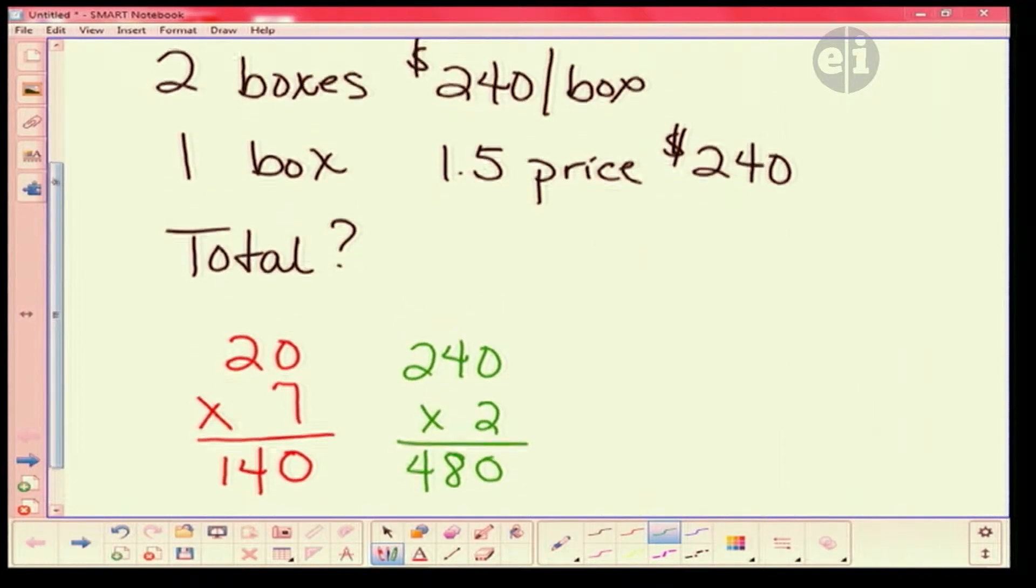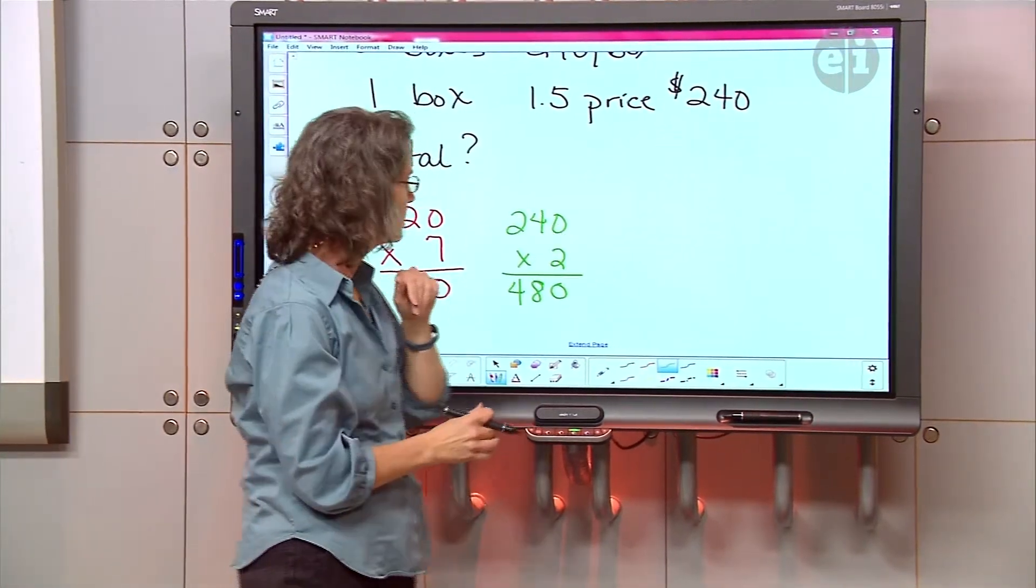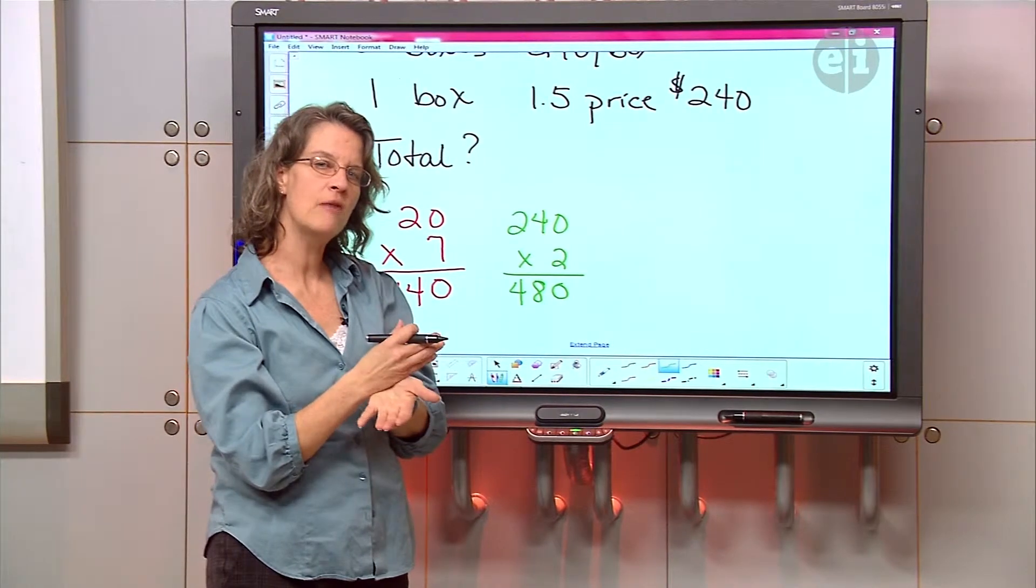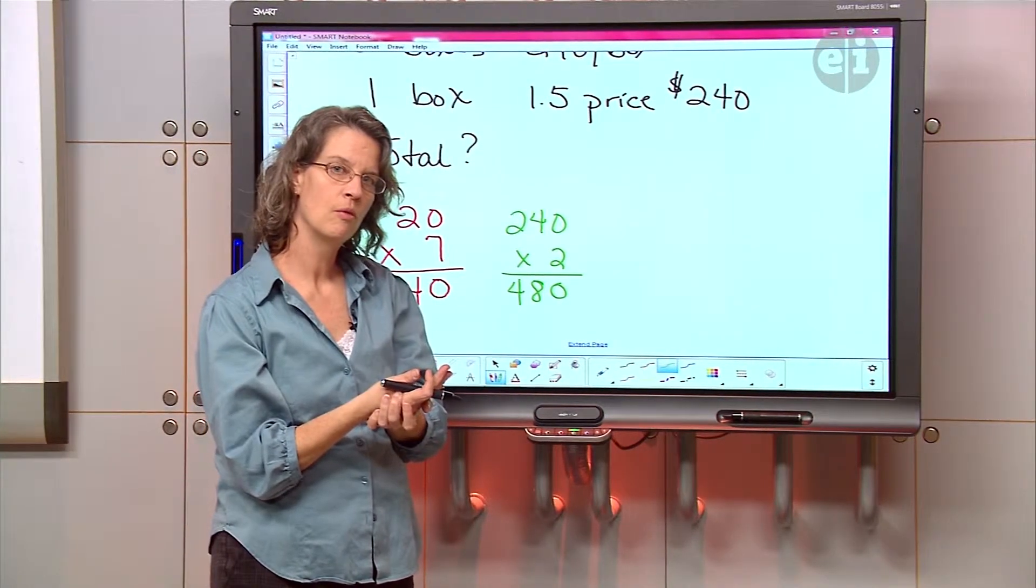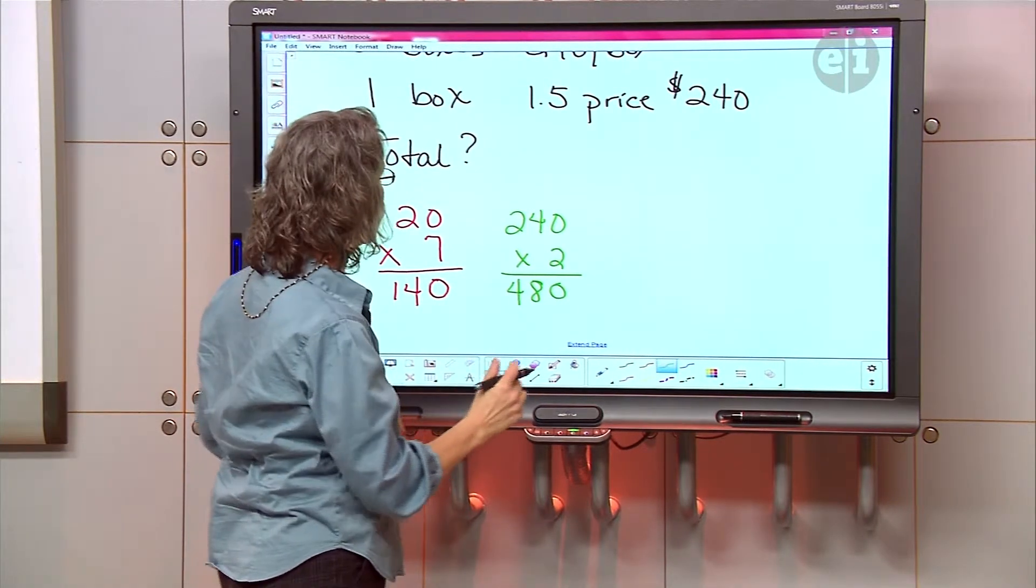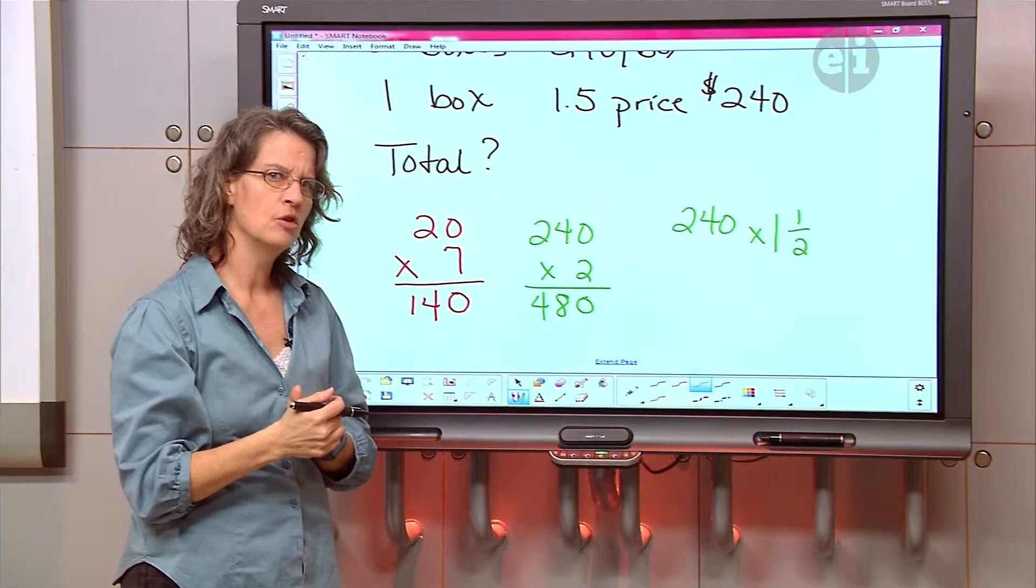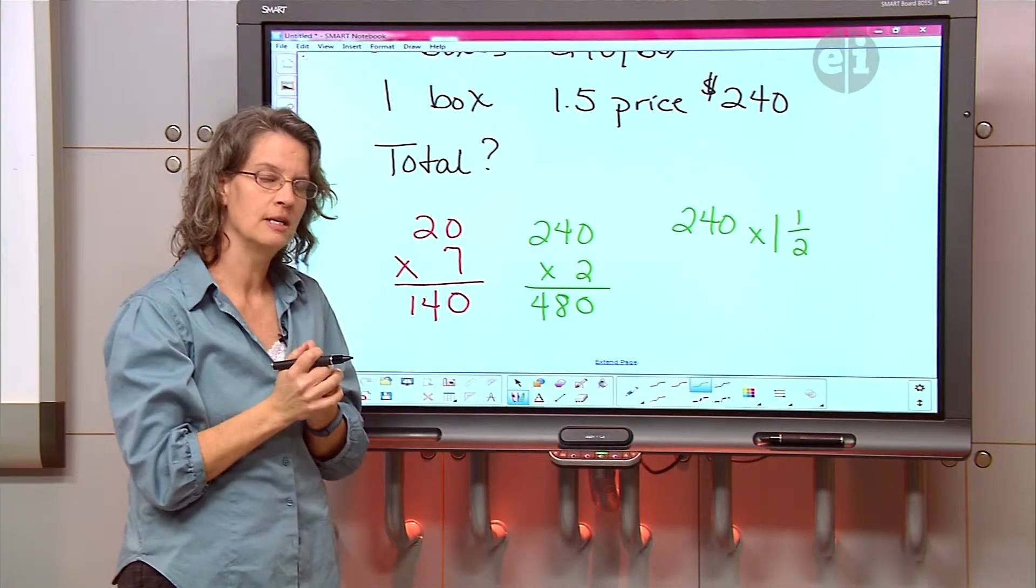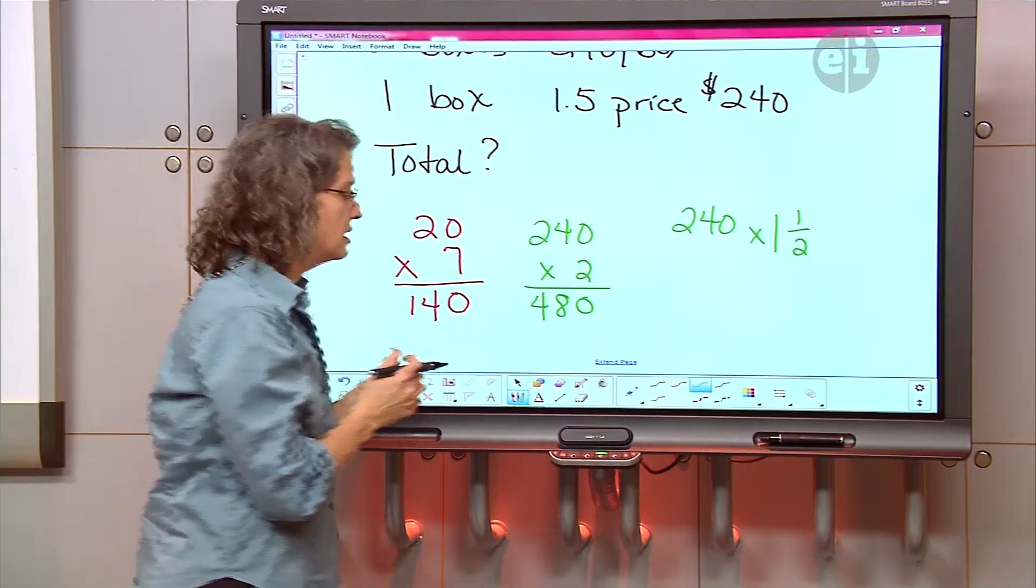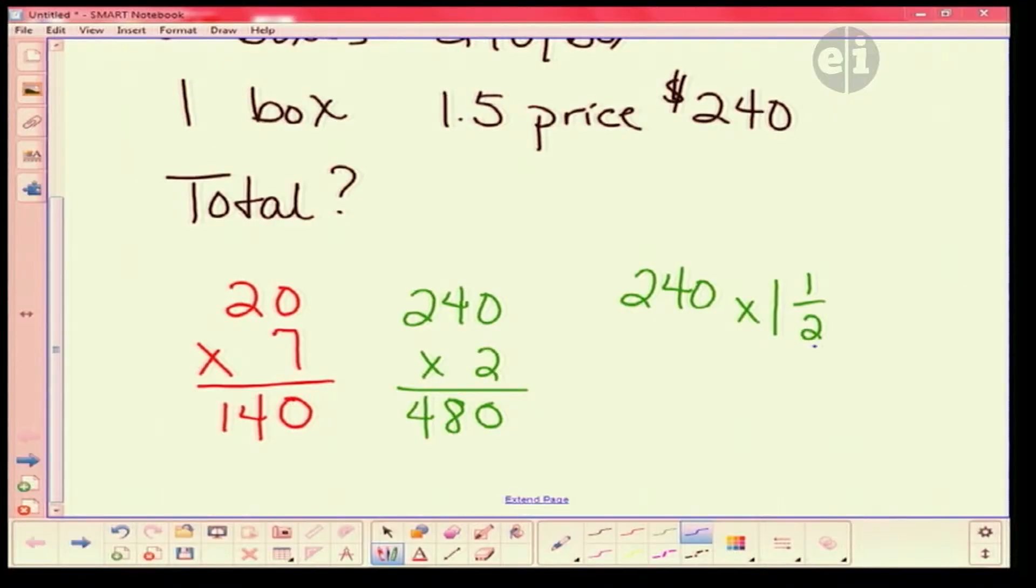And then you have one box that's at one and a half the price of the bow ties, which is $240 per box, correct? Are you multiplying by decimals right now, or are you multiplying by fractions? Right now, we are multiplying by fractions. By fractions. So then I'm going to write this as 240 times one and one half.